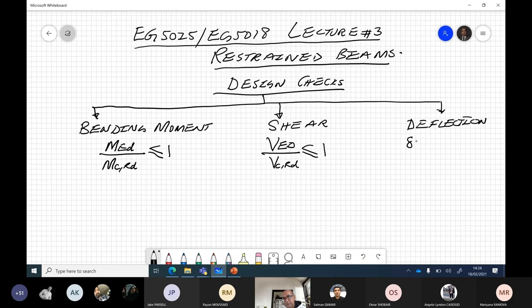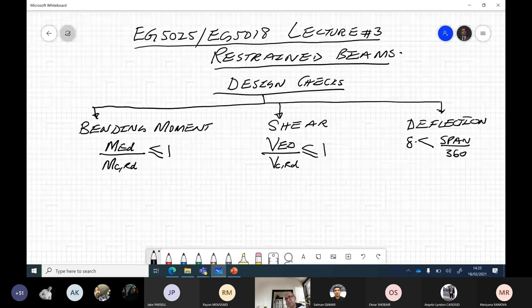The deflection in a beam should be less than the span over 360. This is a universal limit for beams which have plaster or which have slab on top of that. But how do we work out this deflection? It really depends on how you apply loading on the beam.